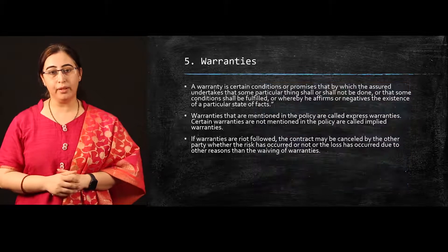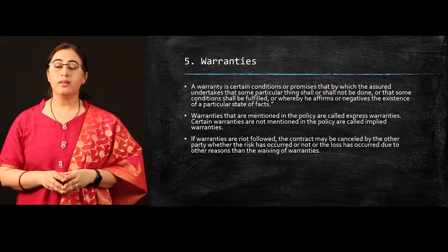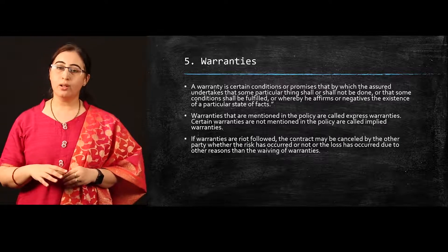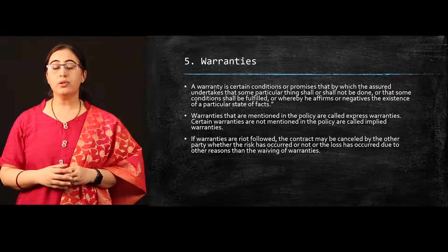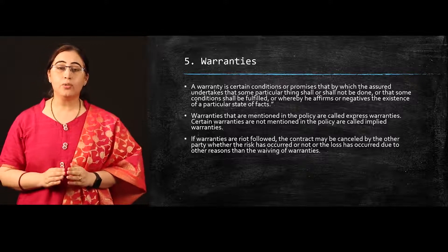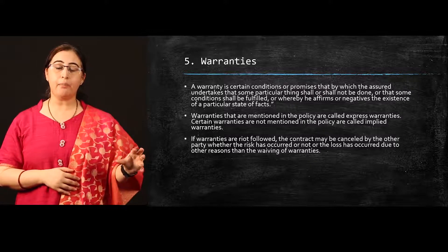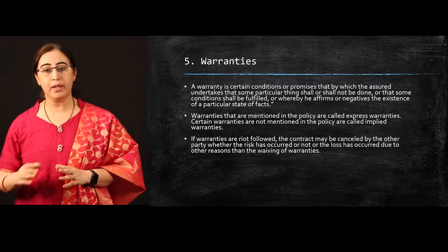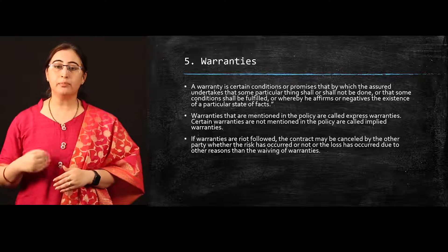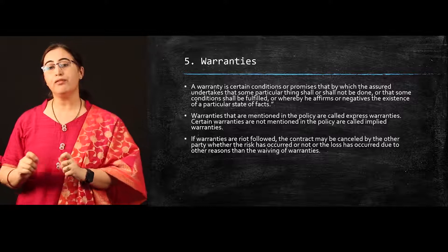When we talk about warranties, a warranty is a certain condition or promise by which the assured undertakes that some particular thing shall or shall not be done. These warranties may be implied or expressed in nature. This is a warranty which sets out certain guidelines — if a particular thing happened, the insurance company will not pay you, and if certain things did not happen, the insurance company is liable towards you. So it is necessary that warranties must be followed.